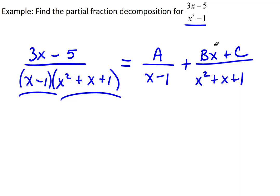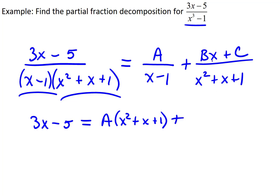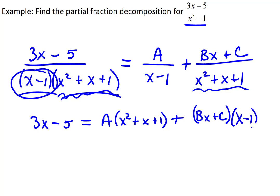The rest of the process is the same: we clear the fractions by multiplying by the LCD. That leaves us with 3x minus 5 on the left. On the right, we have A times (x squared plus x plus 1), plus (Bx plus C) times (x minus 1).